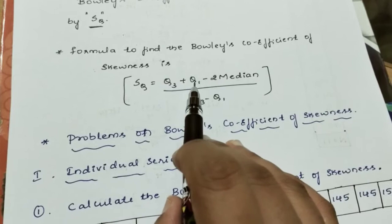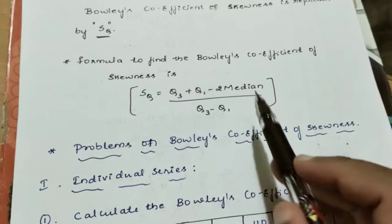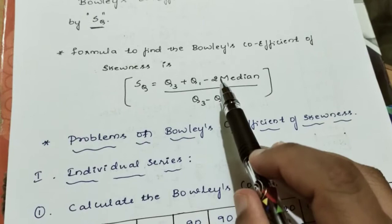The formula uses Q3 plus Q1 and 2 into median. Median has already been discussed. Using this formula, we are going to calculate the Bowley's coefficient of skewness.